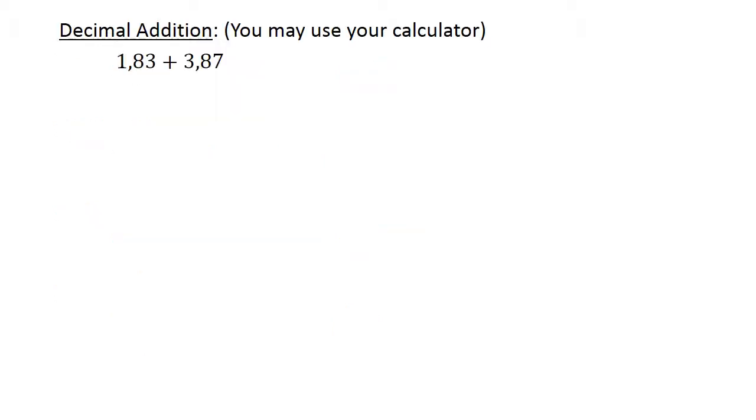Decimal addition. Again, use your calculator to check all answers. 1.83 plus 3.87 equals 5.7.